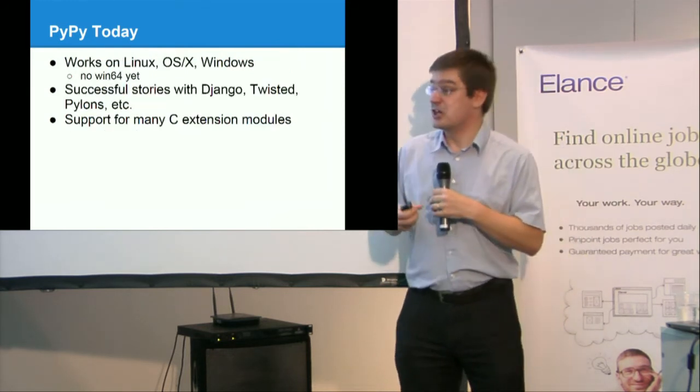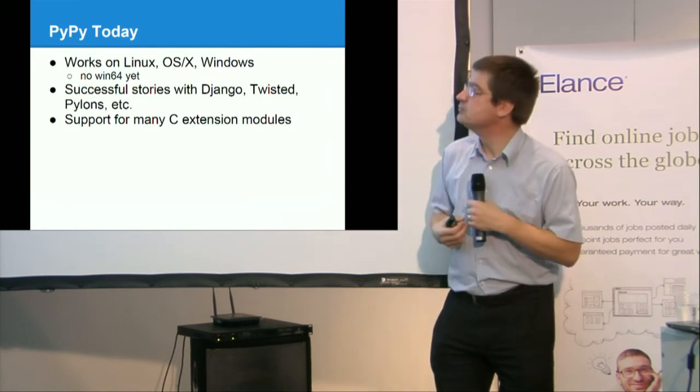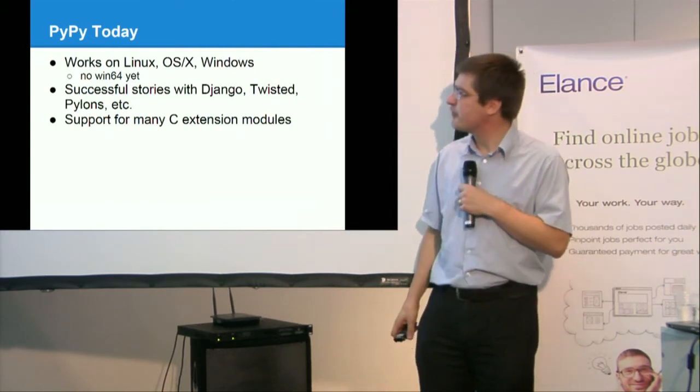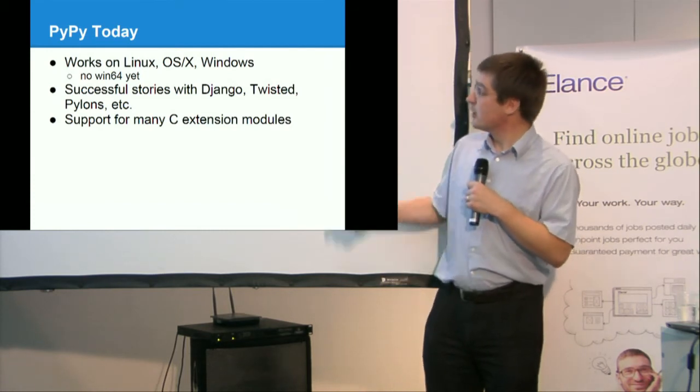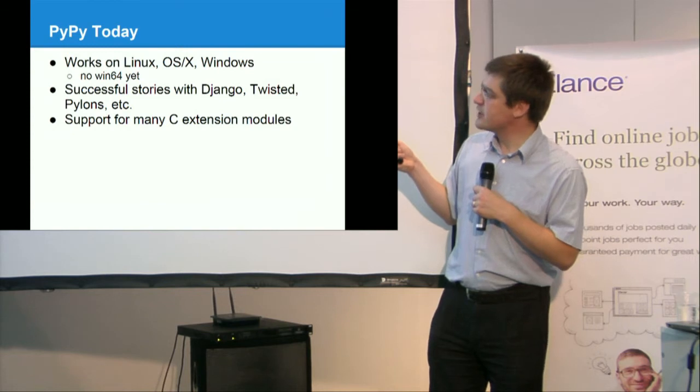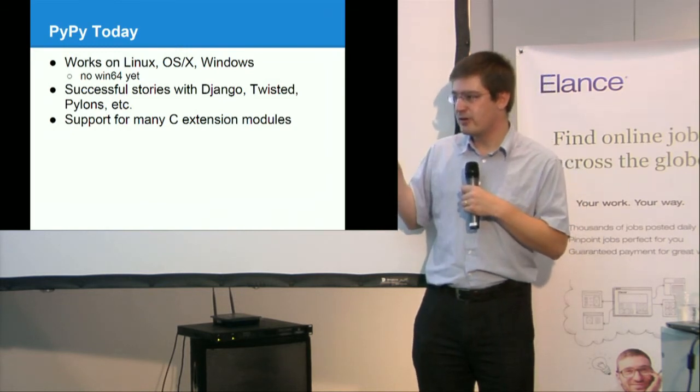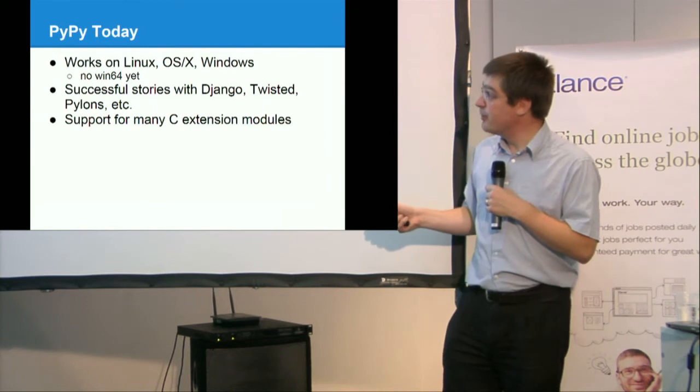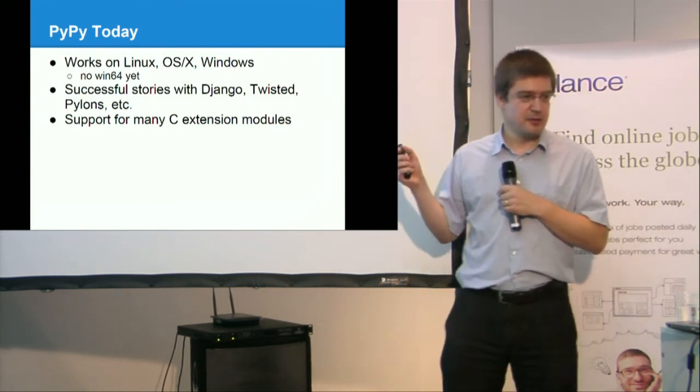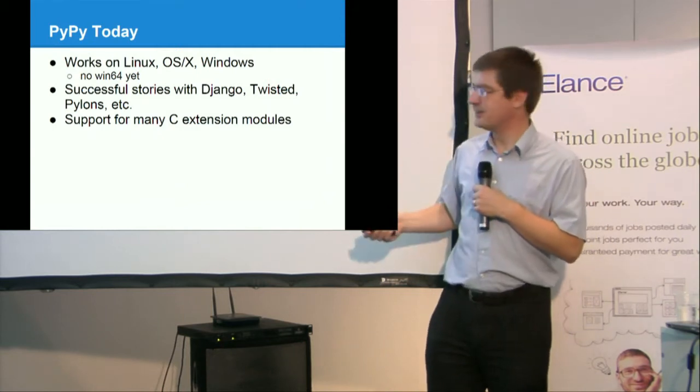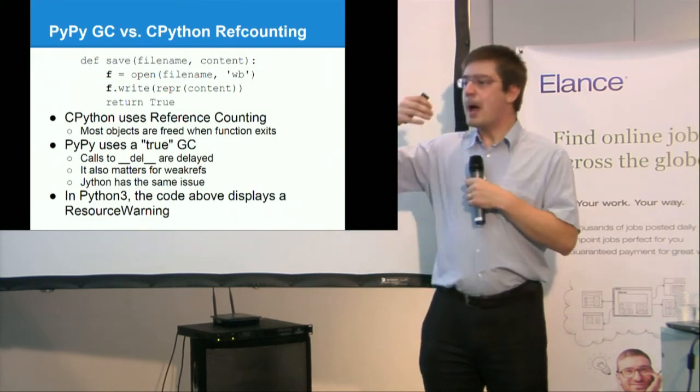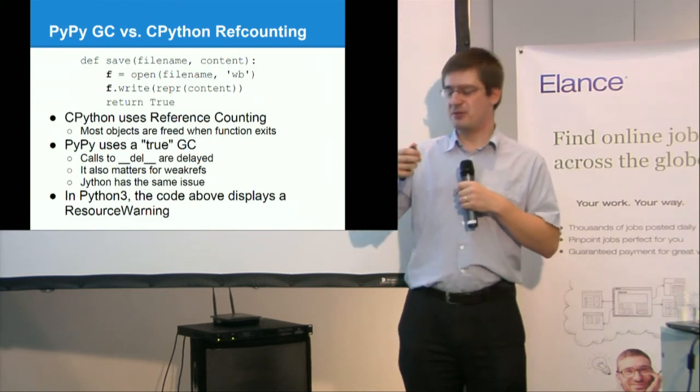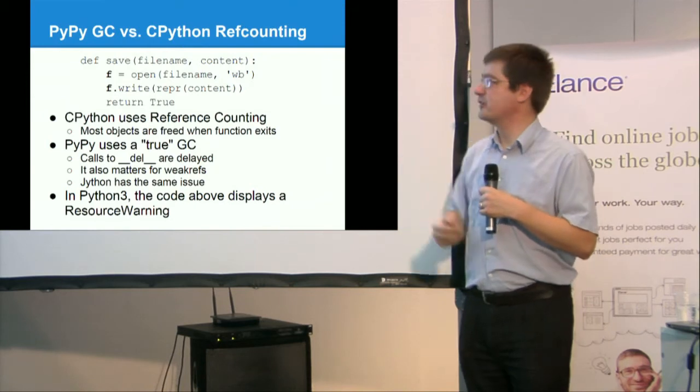And there are some implementation details that still differ, and that will differ. The complete list, you have got this PyPy differences page. Just Google for this string, and you can find it. PyPy today works, and it works by I mean is supported on Linux, OSX, Windows, not Windows 64-bit yet. It's a weird platform for some reasons. And we have successful stories with Django, Twisted, Pylons, and so on. I know for sure that, for example, the twistedmatrix.com server, last time I asked it, still runs with the PyPy server. And there is also support for many C extensions modules. PyPy is written in Python, but still has support for modules written in C.